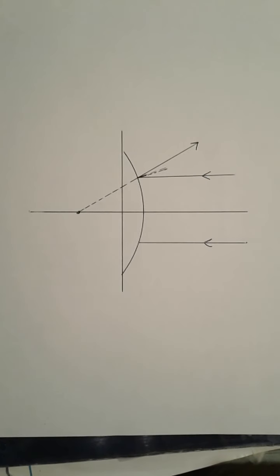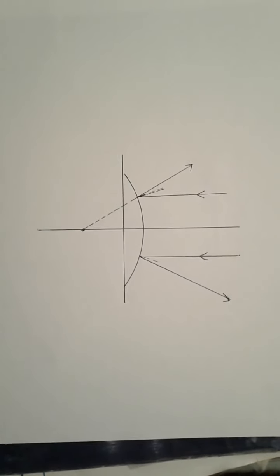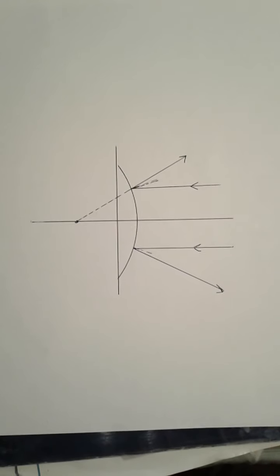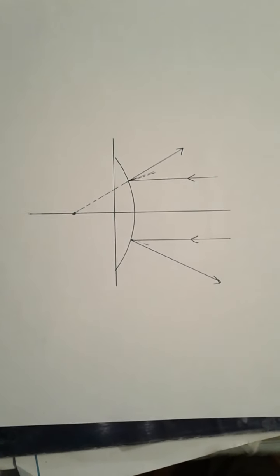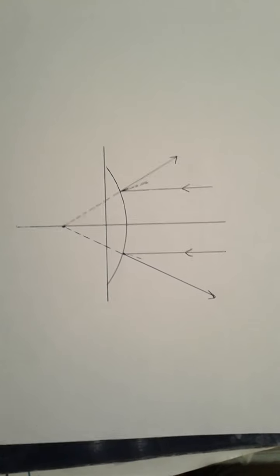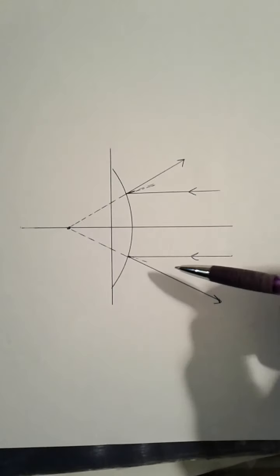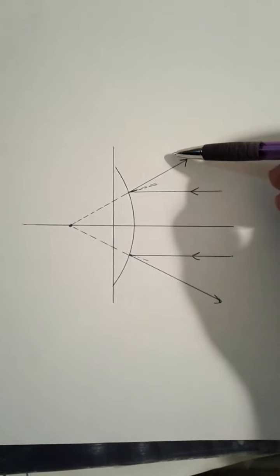Another light ray coming in parallel. We'll do the same thing and it will seem like it's coming from the same virtual focus. And this is why we saw a cone of light spreading out from the mirror.